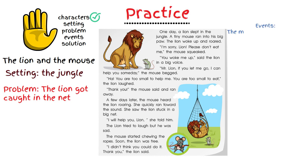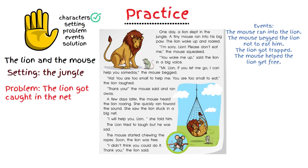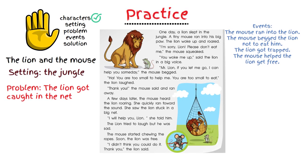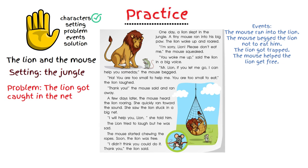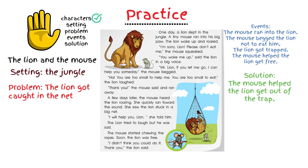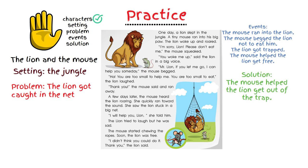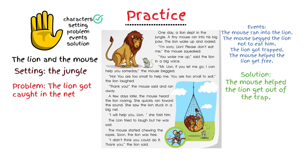The events in the story are: the mouse ran into the lion; the mouse begged the lion not to eat him; the mouse promised the lion that he would help him if he needs it; the lion got caught in the trap and the mouse helped the lion get free. The solution is that the mouse helped the lion as he promised to.